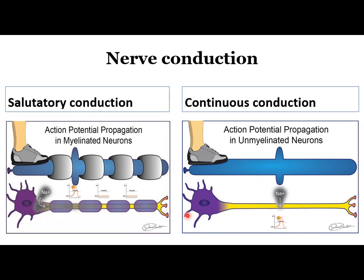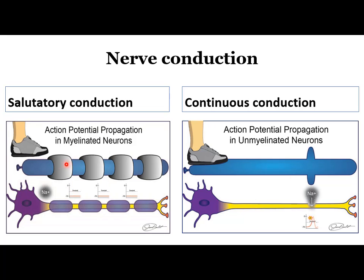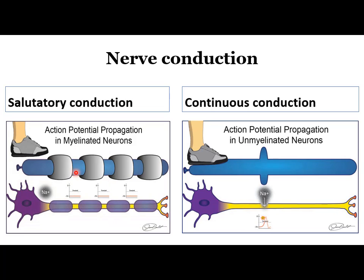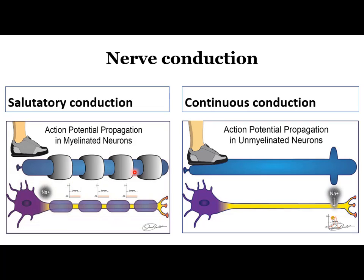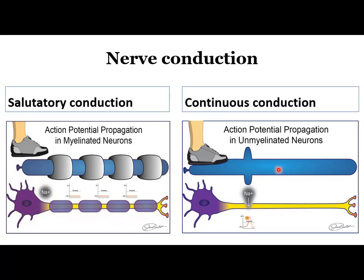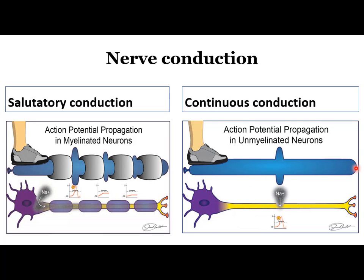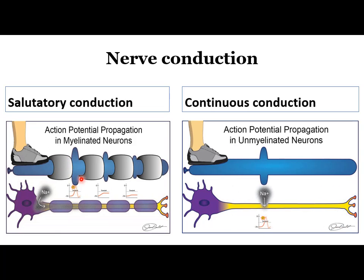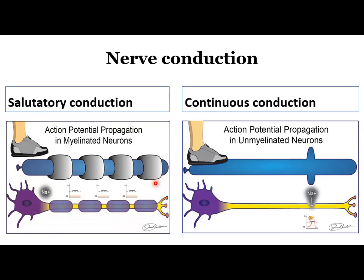Looking at this figure: here is a myelinated nerve fiber with myelin sheaths. The myelin sheath is interrupted — not continuous — at the nodes of Ranvier. In unmyelinated fibers, the action potential travels along the whole axon. In myelinated fibers, the action potential is generated only at the nodes of Ranvier.